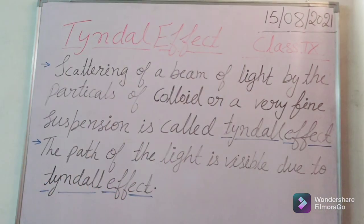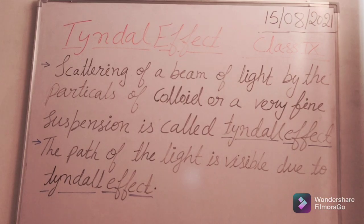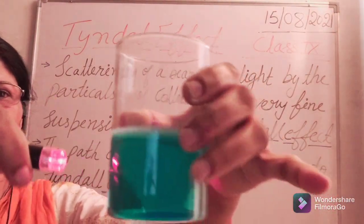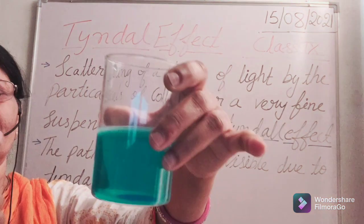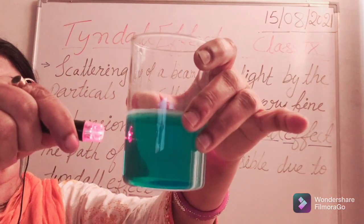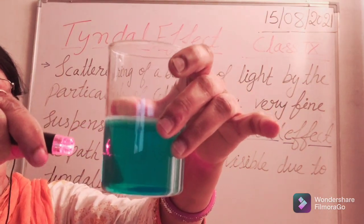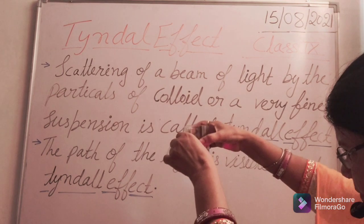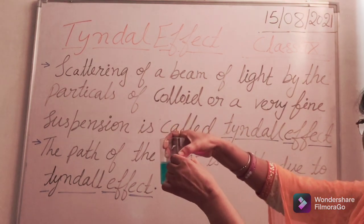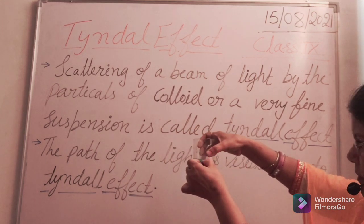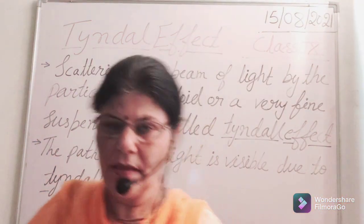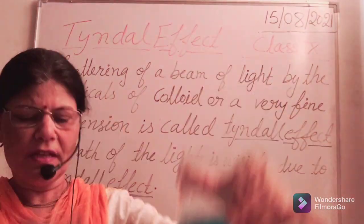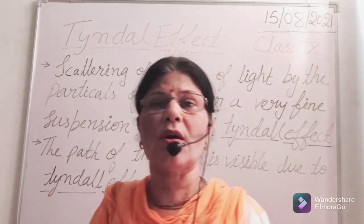Let me switch off the light. Are you able to see the path of the light? We can see the flash of the light here, but its path is not visible. The path of the light is not visible through this true solution of copper sulphate in water.